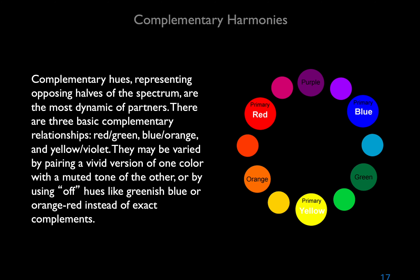Complementary hues representing opposing halves of the spectrum are the most dynamic of partners. There are three basic complementary relationships: red-green, blue-orange, and yellow-violet. They may be varied by pairing a vivid version of one color with a muted tone of the other, or by using off-hues like greenish-blue and orange-red instead of exact complements. It is important to remember that complementary colors have tremendous psychological importance — green reminds us of nature's greenery, red of its flowers, blue of the sea and sky, orange of fire, purple of royalty, and yellow of the sun.